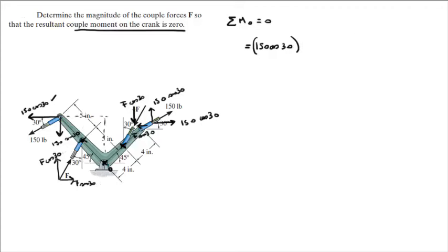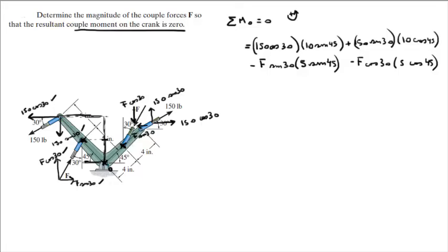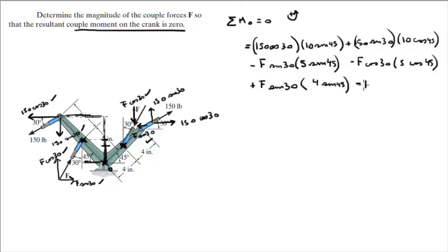Now I'm going to do the forces on the right-hand side and the moments they create. The moment created by this F sine of 30 is plus F sine of 30 times 4 sine of 45, because this F sine of 30 is going to the left at this point, turning the lever arm from here to here. And minus because this one creates a clockwise moment: F cosine of 30 times 4 cosine of 45, because it's turning the lever arm that goes from here to here.